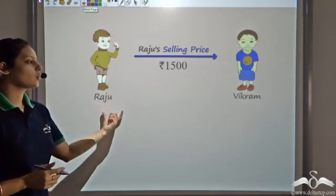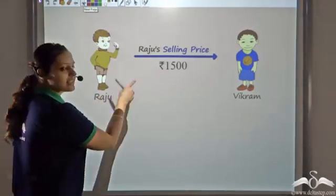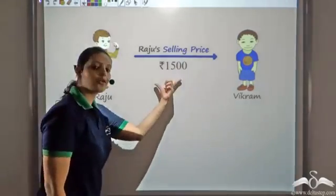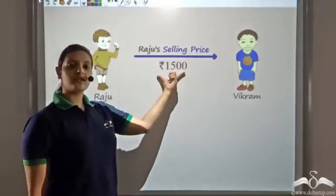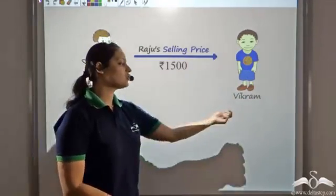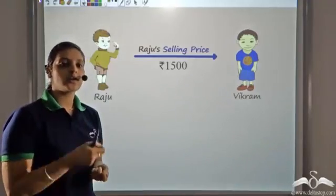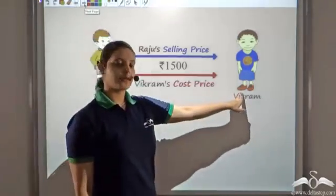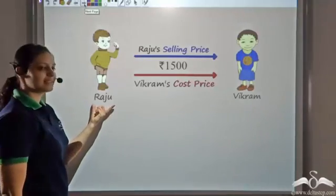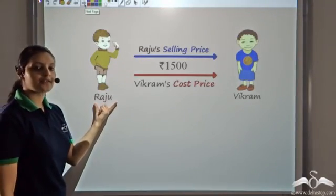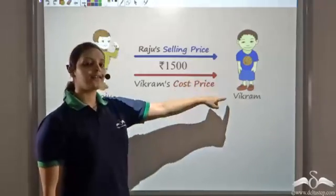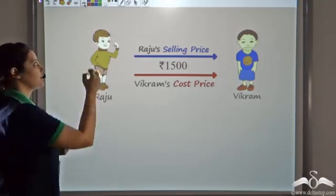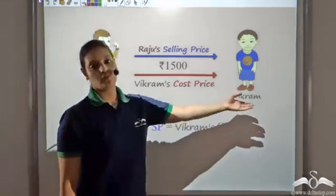Raju sold the t-shirt to Vikram at 1500 rupees, so Raju's selling price is 1500 rupees. This can also be seen as Vikram buying the t-shirt for 1500 rupees, which becomes his cost price or buying price. So Raju's selling price is equal to Vikram's cost price.